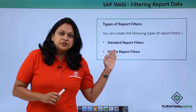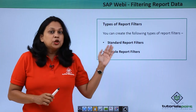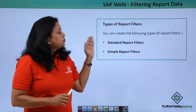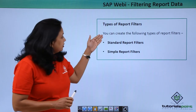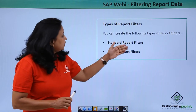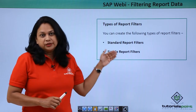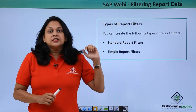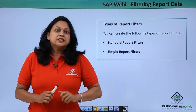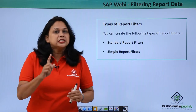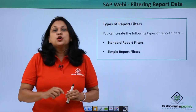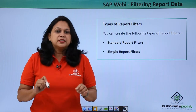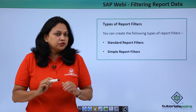Now let us see the different types of report filters. You can create the following types: standard report filter and simple report filter. Standard report filters are used to filter a single value or lists of values and are the most flexible type of report filters.